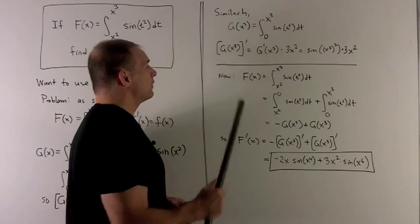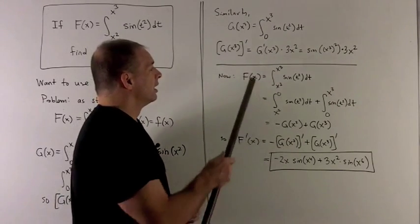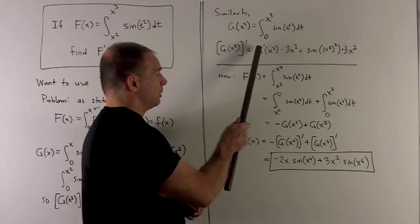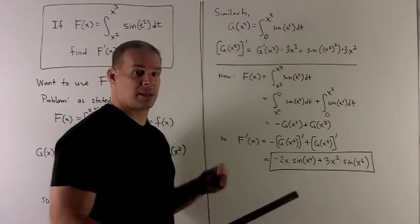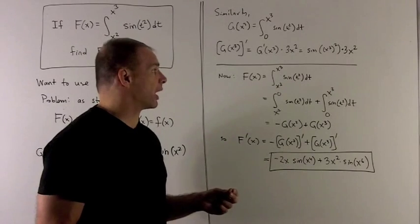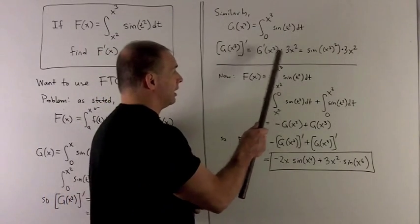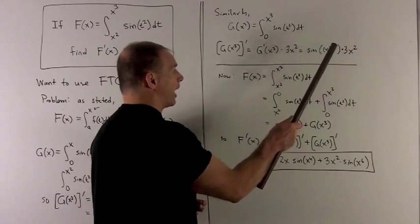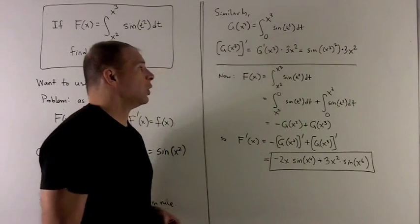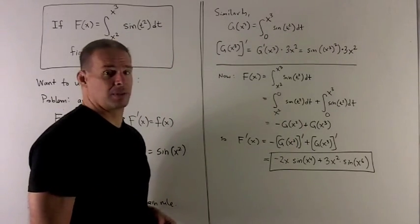I'm going to take its derivative, so the chain rule applies again. And now we're going to have G prime applied to X cubed times the derivative of the inside, which is 3X squared. That's going to give me sine of X cubed squared times 3X squared, or sine X to the sixth 3X squared.